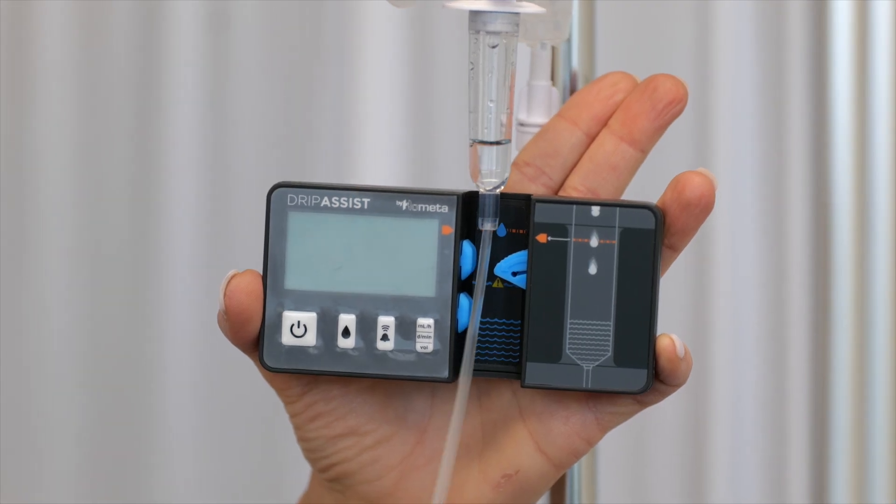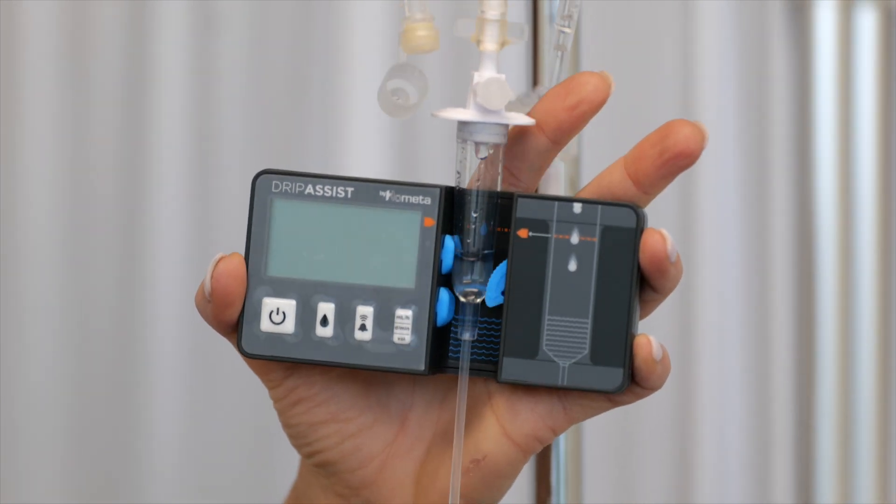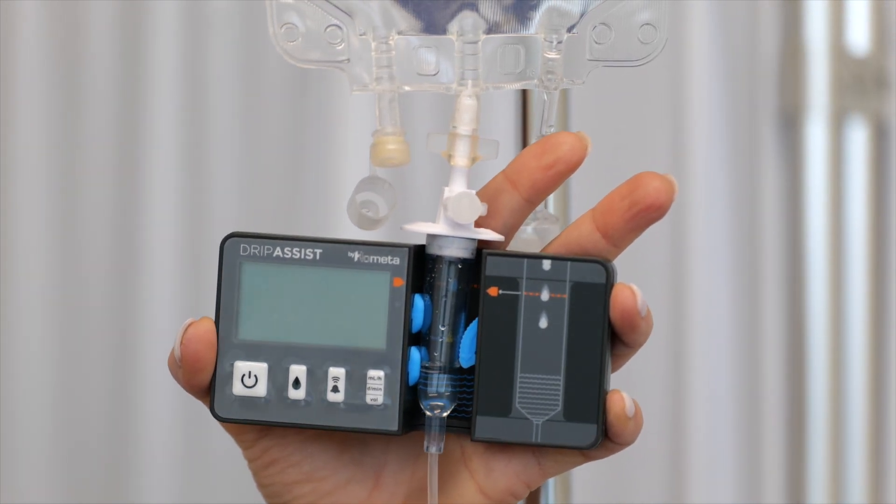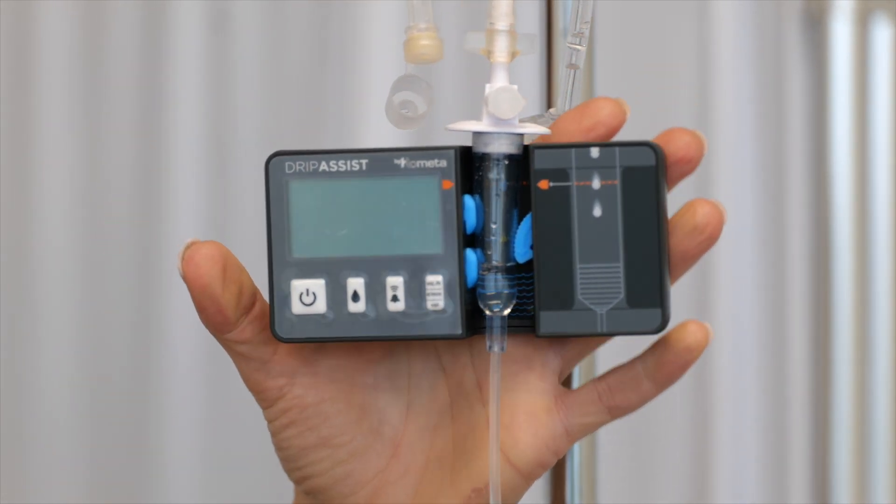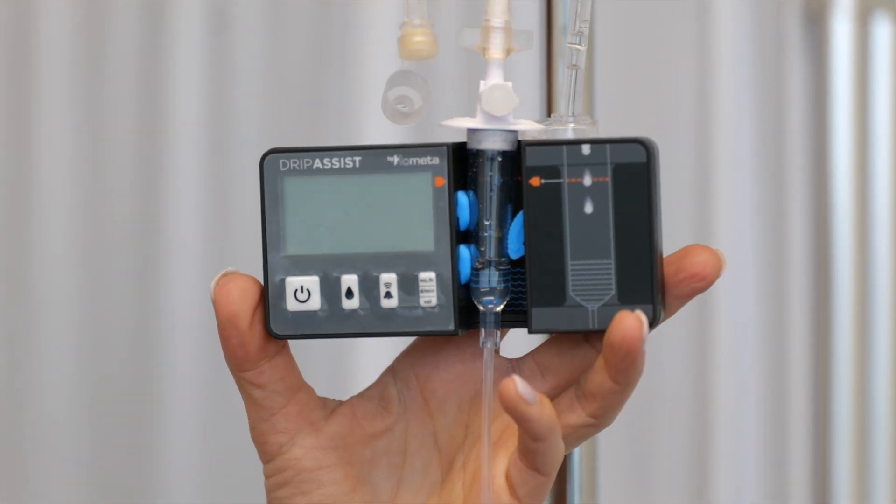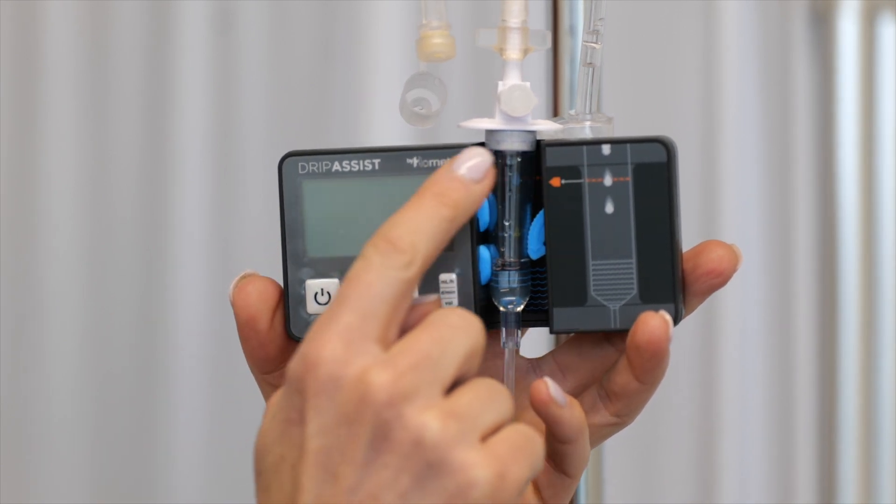Once your drops have begun to flow, you'll slide DripAssist up onto the chamber. Make sure to secure the device so that the drops are free-falling through the infrared sensor, demarcated here with orange arrows.